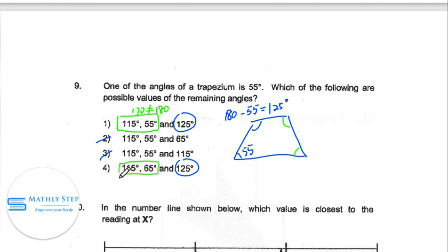And this option 4, 115 and 65 is 180. So this is correct. So the possible values is option 4.